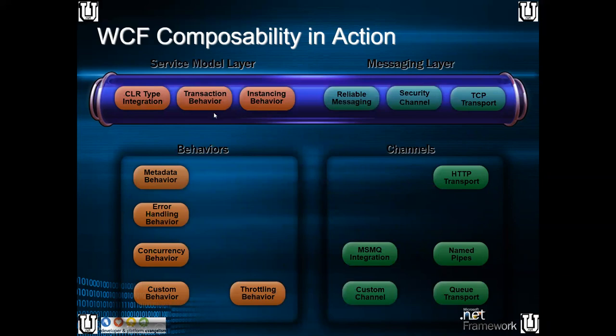In the service model — server side — messaging layer means the data that is getting transferred from client to server. You just set some properties, and this is the service model. I was talking about instancing behavior — what type of behaviors we have: concurrency behavior, throttling behavior, error handling, metadata behavior. Concurrency — nothing but how many objects are being created, how many users are going to use that service. After reaching the number of users hitting that service, you can block other users — you can set concurrency and throttling behavior. Metadata behavior means whatever you are going to expose, if you don't expose a particular method, you can exclude it. Error handling means we talk about the fault contract.